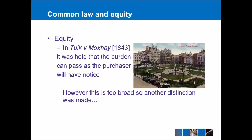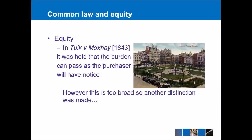We also have to look at equity. The main case in this area is Tulk v Moxhay (1843), which concerned a covenant in Leicester Square saying that you couldn't build anything there. It was held in this case that the burden can actually pass as the purchaser will have notice of it — the courts didn't want people randomly building in the middle of Leicester Square. However, the problem with Tulk v Moxhay was that it was very broad, the idea that all burdens and covenants should be able to pass, and so another distinction had to be made.